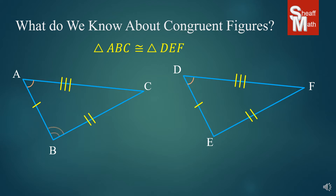They also have to have congruent angles in the corresponding parts. So they have to have all the same angles and all the same parts in order to prove that they are congruent.